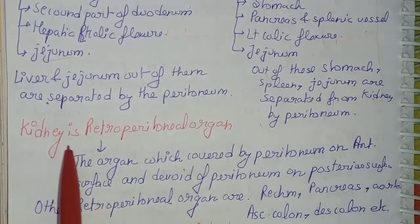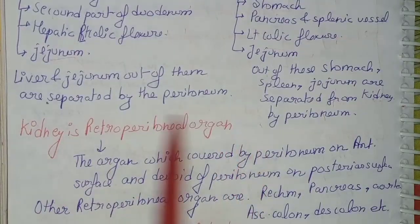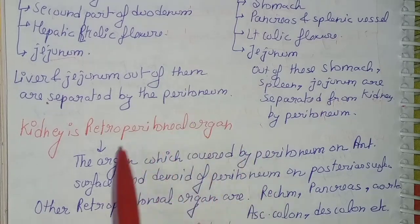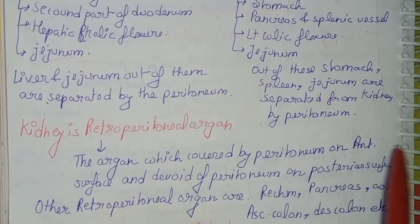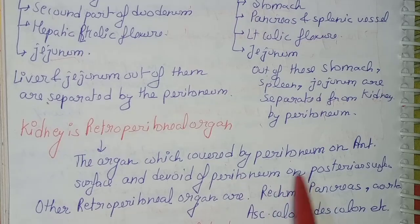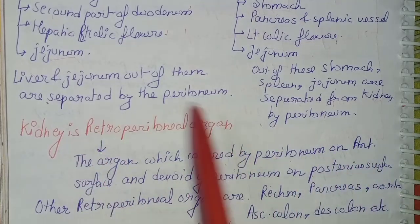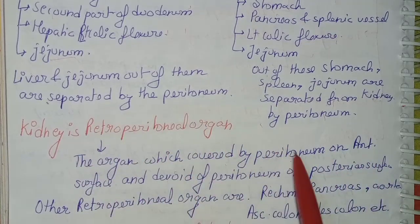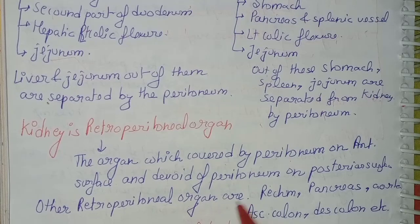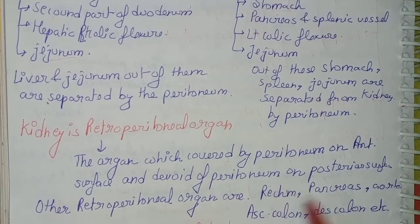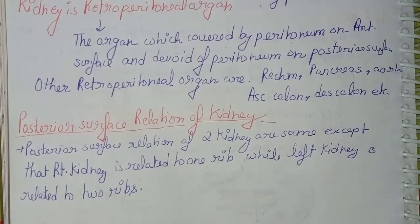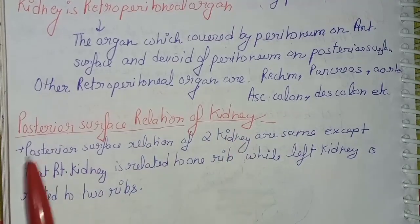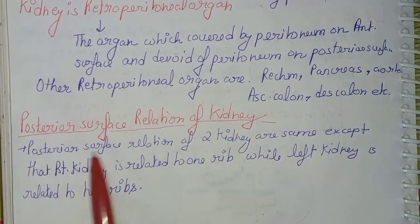The kidney is a retroperitoneal organ. A retroperitoneal organ is one that is covered by peritoneum on the anterior surface but devoid of peritoneum on the posterior surface. Other retroperitoneal organs include the rectum, pancreas, aorta, ascending colon, and descending colon.